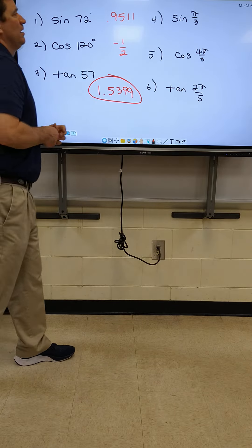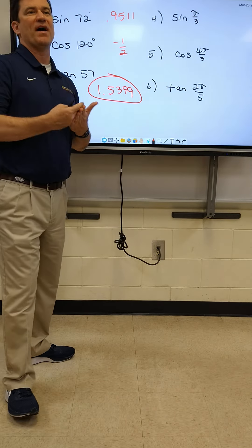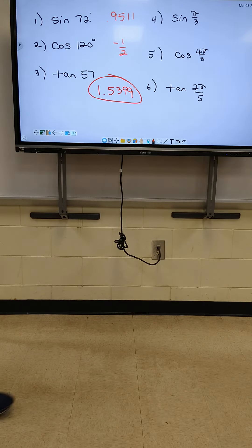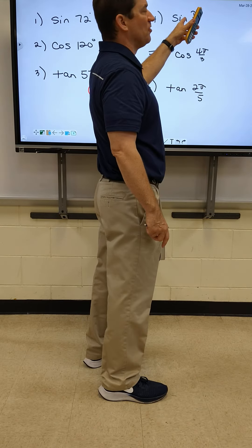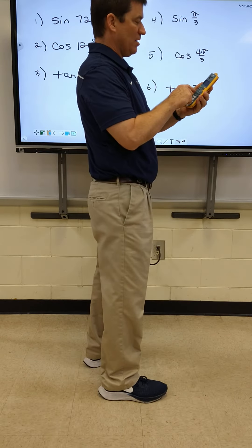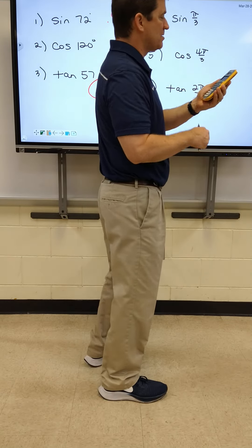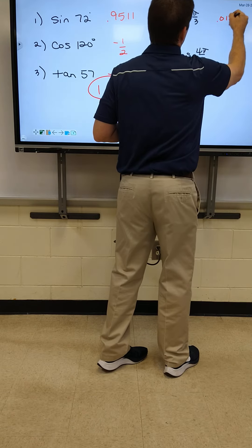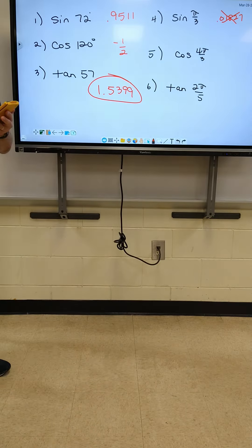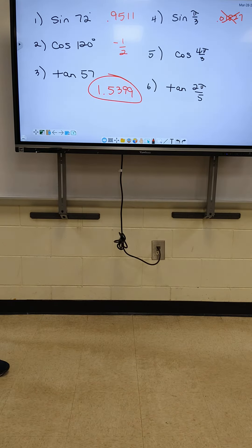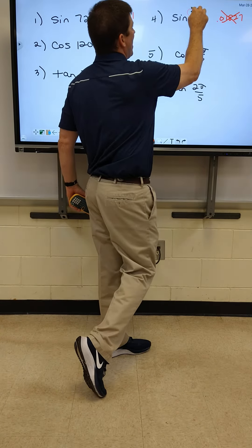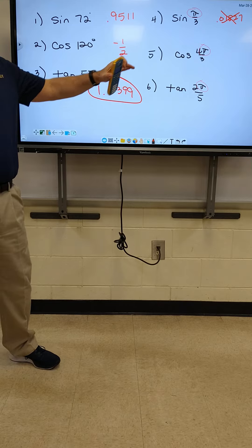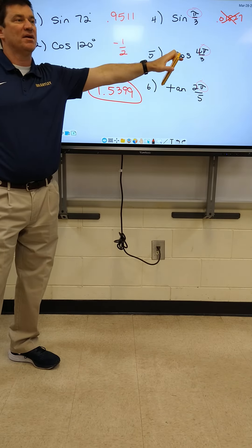Alright, number four. Something's different in four, five, and six — it's a fraction but it has a pi. If you type that in your calculator, what does it give you? Sine of pi over three gave me 0.01827 — that is wrong. How do we use the calculator to get the right answer? If it's got a pi in it, then it's a radian number, and your calculator has to be in radian mode.